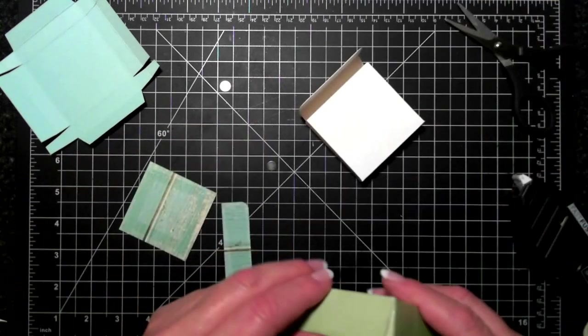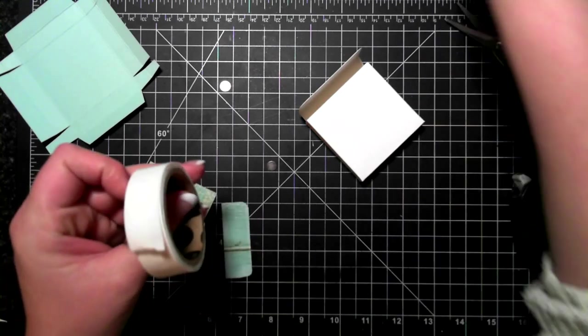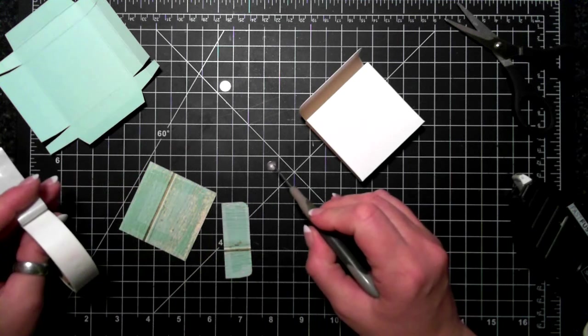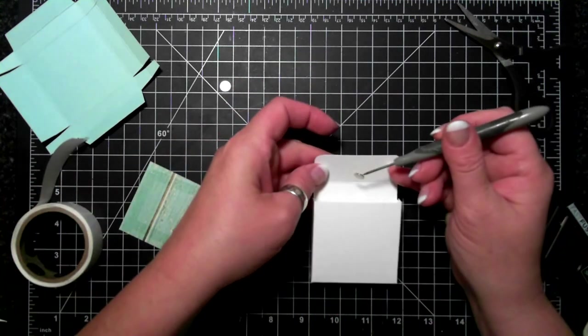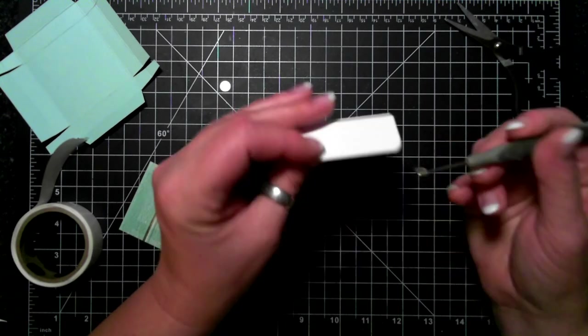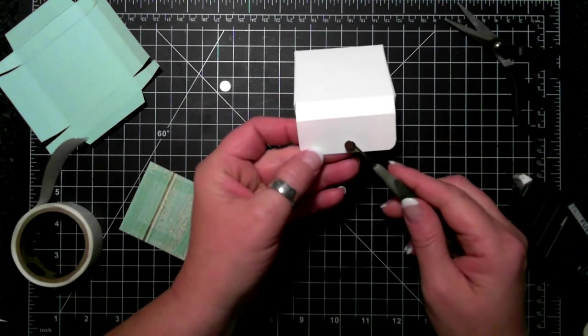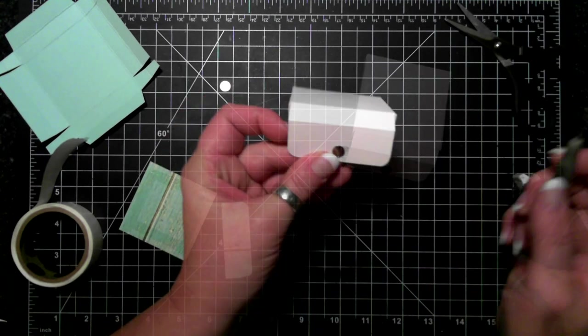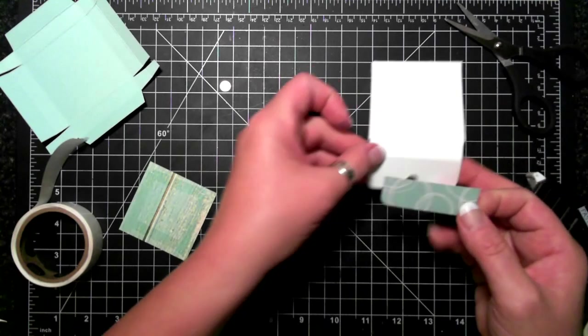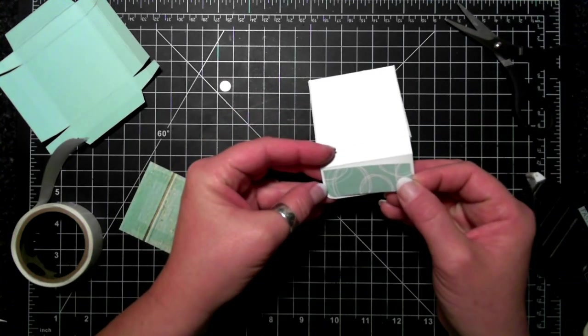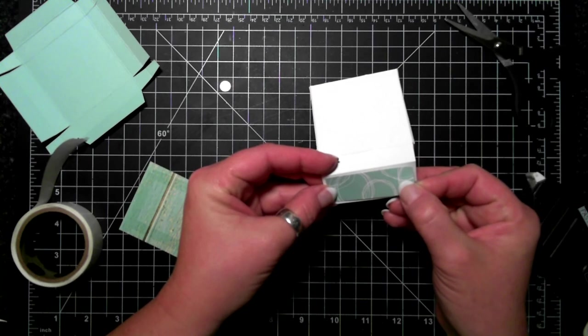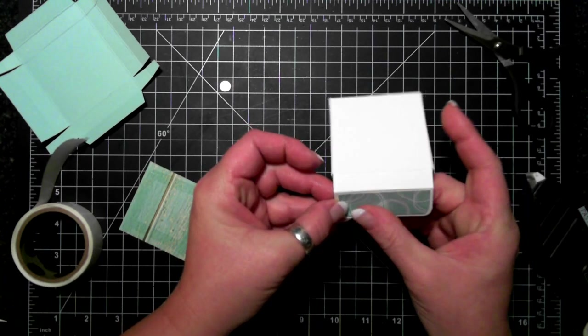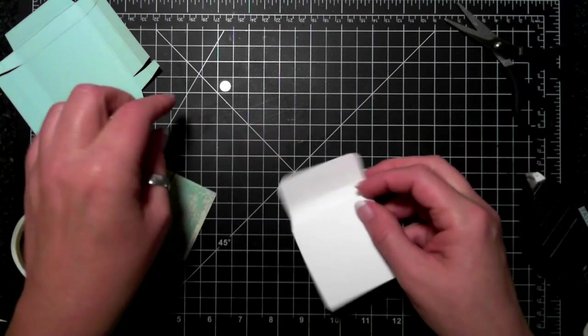I'm going to take a little glue dot and stick it on the back. I wanted to put it on the front actually, so magnet on the front. Now I'm going to put my little strip of paper and cover the magnet.